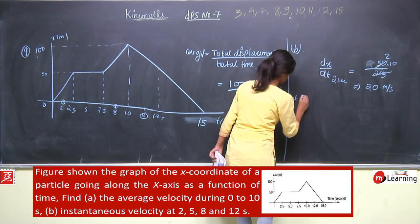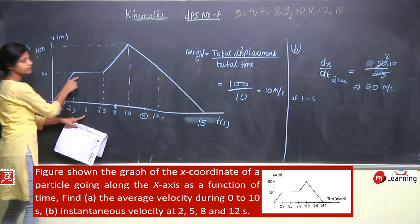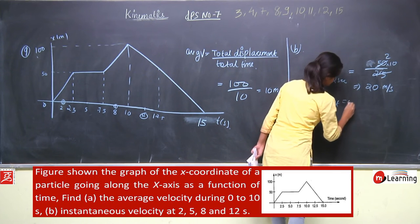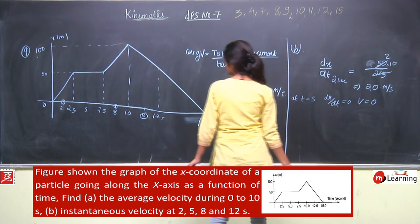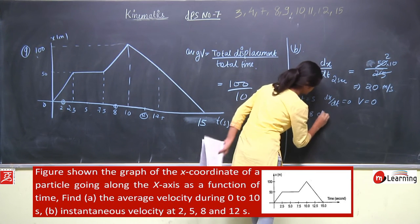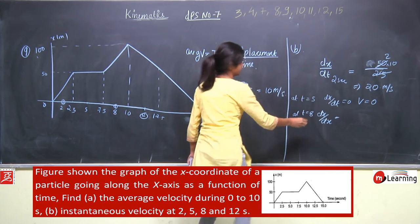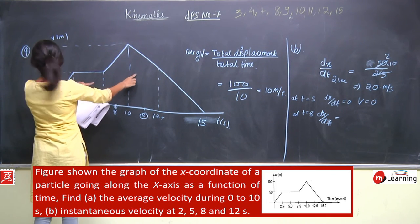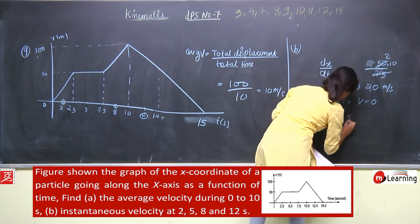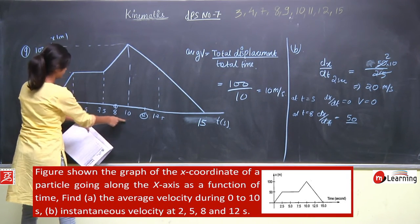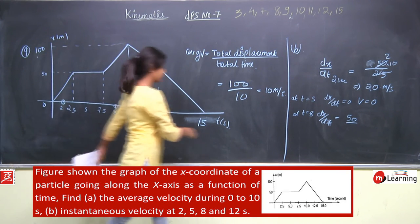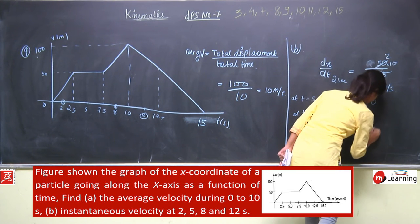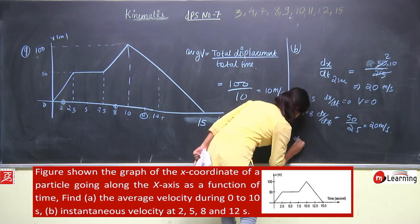At t = 8 seconds: dx = 100 − 50 = 50, और dt = 10 − 7.5 = 2.5. So dx by dt = 50/2.5 = 20 meter per second.